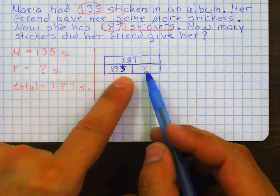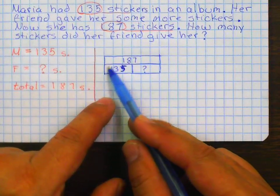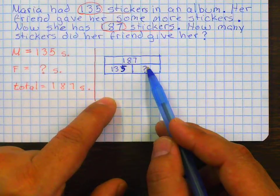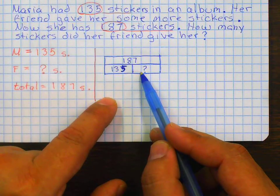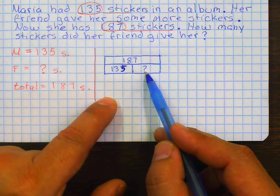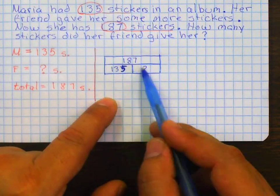So now, question is, can I add 135 plus what her friend gave her? No. Why not? Because we have an unknown number. Because I don't know what that number is, so I cannot add these two.